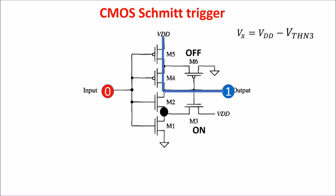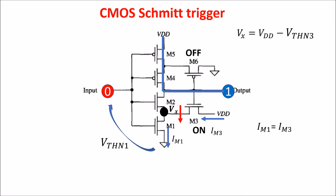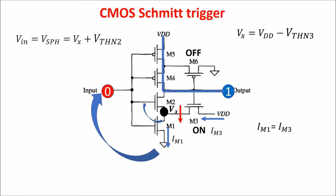If we increase VIN, nothing happens until VIN reaches the threshold voltage of M1. At this moment M1 turns on and VX starts lowering. The current through M1 equals the current through M3. As we keep increasing VIN and VX keeps lowering, the voltage between gate and source of M2 keeps increasing, and at some point — which we call the high switching point — VIN equals the threshold voltage of M2 plus VX, and M2 turns on.